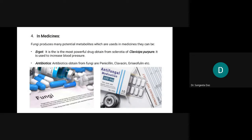The last use is medicine. Humans and fungi have been used to treat various diseases and disorders for thousands of years, saving millions of lives through medicinal properties. Fungi produce many potential metabolites used in medicines and antibiotics. Ergot and antibiotics are particularly important. Ergot is the most powerful drug obtained from sclerotia of Claviceps purpurea.